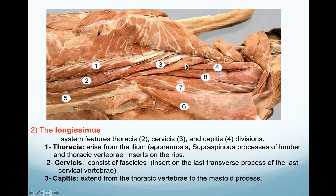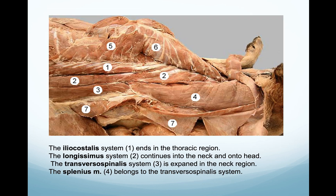The longissimus cervicis ends in the cervical region, and finally, the longissimus capitis is a small slip of muscle that extends toward the mastoid process of the temporal bone. So we have: longissimus thoracis ending at the thoracic level, longissimus cervicis ending in the cervical region, and longissimus capitis - the smaller one - extending toward the head.